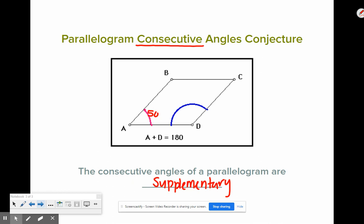If I know that angle A is 50 degrees, that means angle D right here, because they're consecutive, side by side, would have to be 130 degrees. Because they have to add up to 180 degrees.